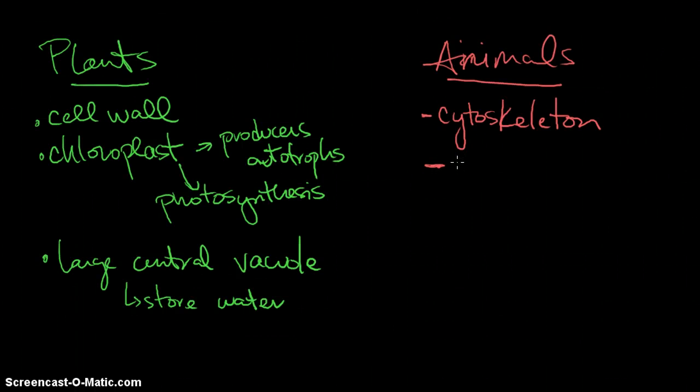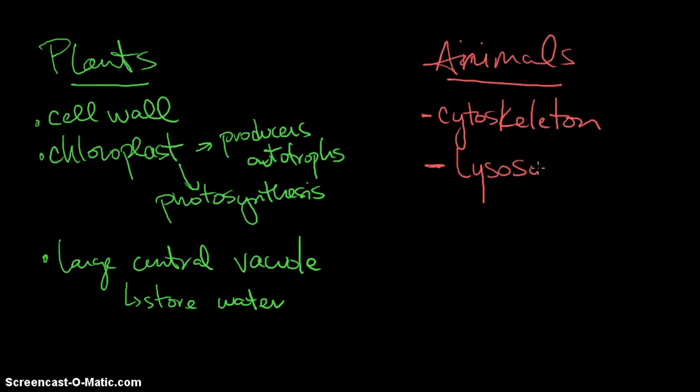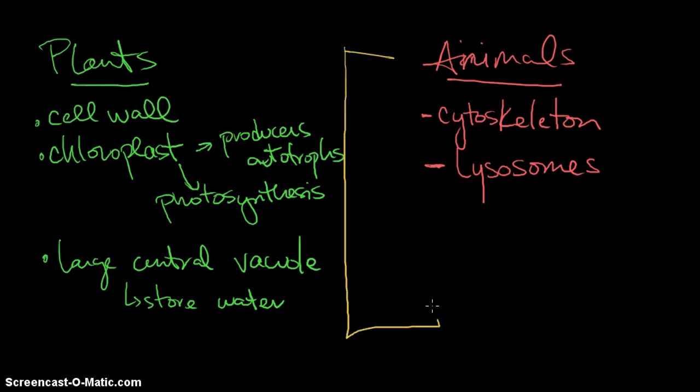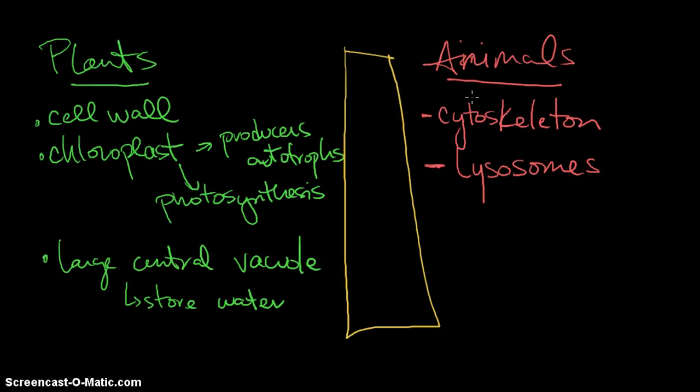Also, we have things called lysosomes. Plants have something else, but for the ones that we've talked about, lysosomes are the ones we've mentioned, and animals have lysosomes. And that's pretty much it that we've talked about that is unique to plants and animals. Everything else that we would put in the middle between these would be all those other organelles that we wrote down for the cell organelle podcast.